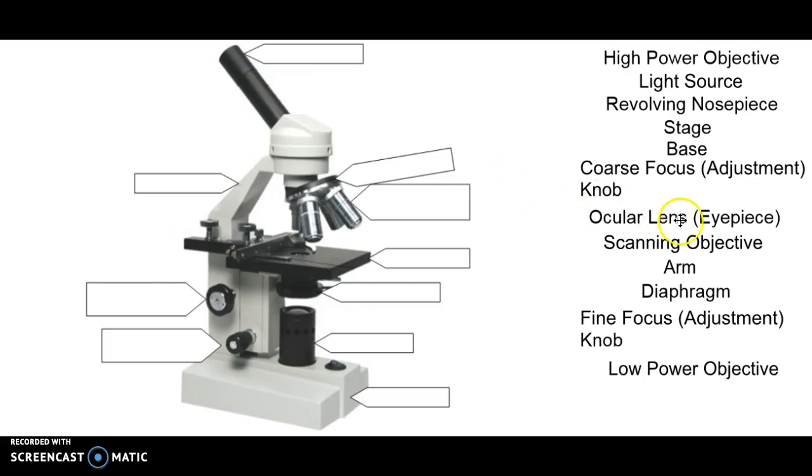Alright, so we're going to start up here at the top with the ocular lens or eyepiece. This is the part of the microscope that you look through to see the specimen.